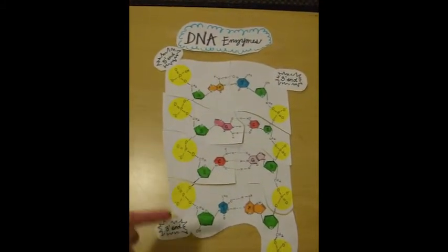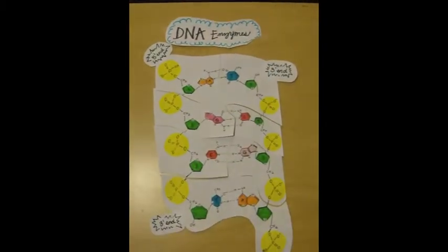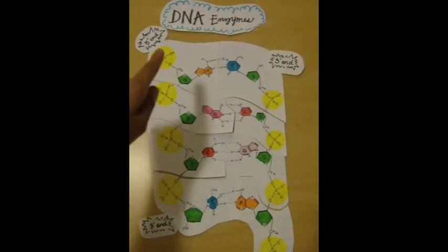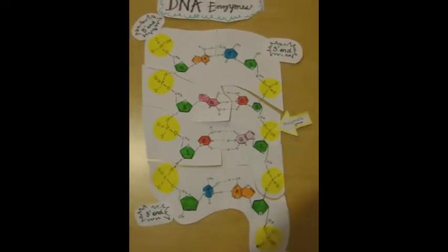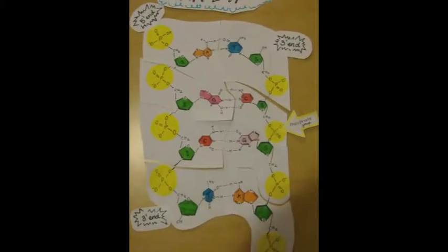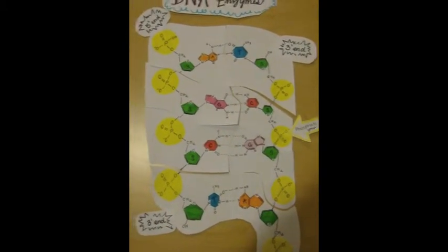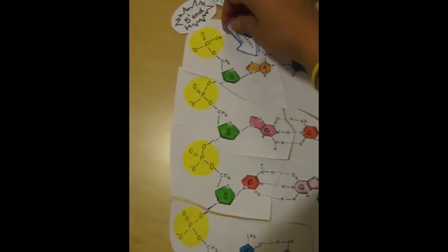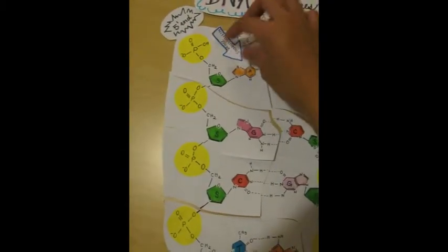One strand runs 5' to 3' and the other 3' to 5'. They consist of sugar phosphate backbones — the yellow circles are the phosphate groups and the green pentagons are the deoxyribose sugars. You can find the nitrogenous bases in the center of the DNA.